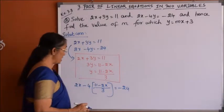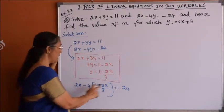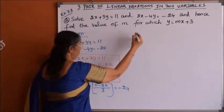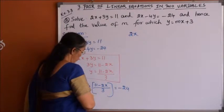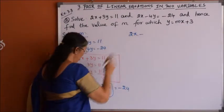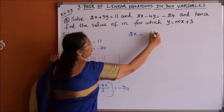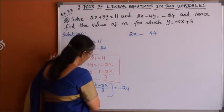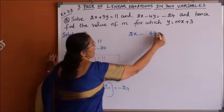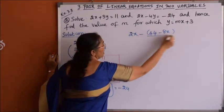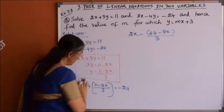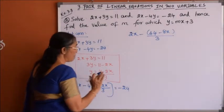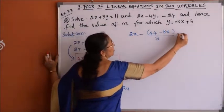Let me simplify this linear equation in one variable x to find the solution. So 2x minus, keeping the minus sign outside first: 4 times 11 is 44, and 4 times 2x gives 8x. So we have the bracket divided by 3, since we multiply only with positive 4, the minus sign remains between the terms, divided by 3 equals minus 24.